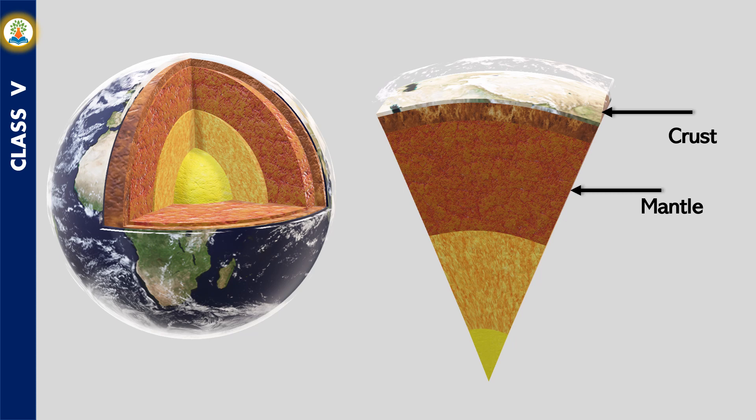Core forms the center of the Earth. It is divided into outer core and inner core. The outer core contains iron and nickel in molten state and the inner core is entirely made up of iron.